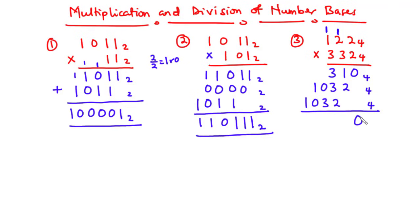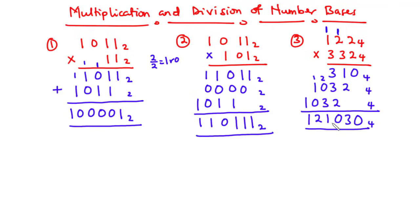0 plus 0 plus 0, we have 0. 1 plus 2 is 3. 3 plus 3 is 6, plus 2 is 8. So 8 divided by 4 is 2 remainder 0. We have 0 and carry on 2. 2 plus 0 is 2, plus 3 is 5. So that is 1 remainder 1. We have 1 and carry on 1. 1 plus 1 is 2, and then we have 1 here. So we have our answer to be 121030 base 4.